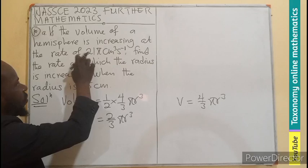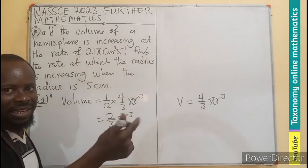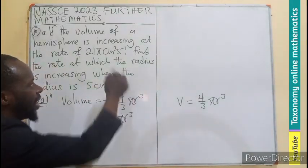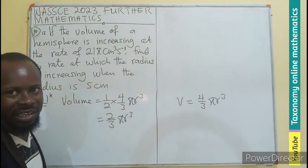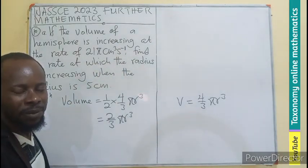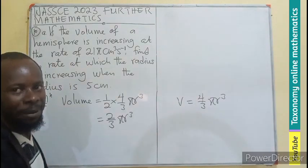Now, the volume of a hemisphere is changing at a rate per something. And the rate is per what? Seconds. And seconds is what? Time. So that's the rate of change. It's changing with time.